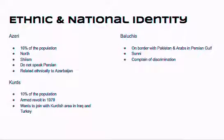The last group are the Baluchis, on the border with Pakistan and other Arab neighbors on the Persian Gulf. They are Sunnis — also Muslim but of a different type of Islam — and they complain of discrimination and have organized protests, with instances of violence. Iran, unlike the United Kingdom and China, has not devolved power to ethnic and religious minorities as a way of appeasing them. Non-Persians have historically had few opportunities for education or media in their own native languages, and there are very few Sunnis in government.